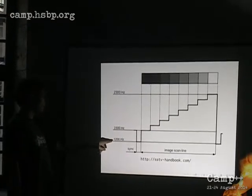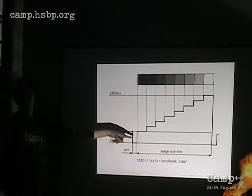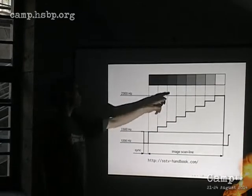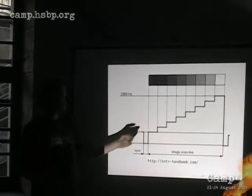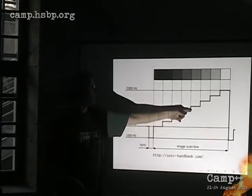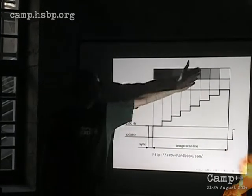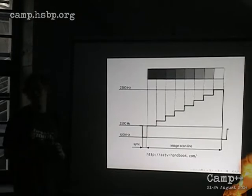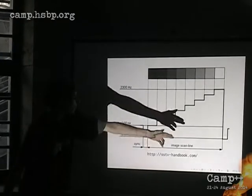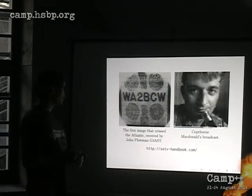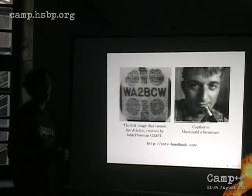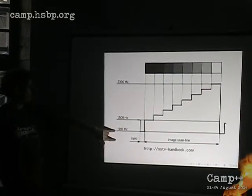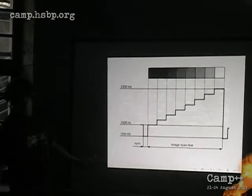1200 hertz says this is a synchronization pulse — this is where a row begins. Then you send the row by saying that 1500 hertz means black and 2300 hertz means white, and everything in between is encoded linearly. This step-like line shows you how to transmit a gradient signal, and it's fully analog and really easy to decode. This is basically the only thing all SSTV implementations agree on: one scan line, and you have lots of these to make up a single image. They tried transmitting it over ham radio, because ham radio equipment is usually designed to transmit this four kilohertz window — though it doesn't start at zero hertz and doesn't go up to four kilohertz, to avoid interference.